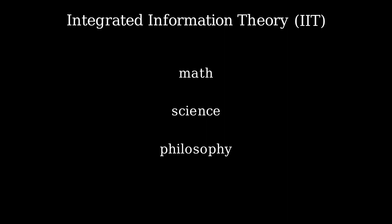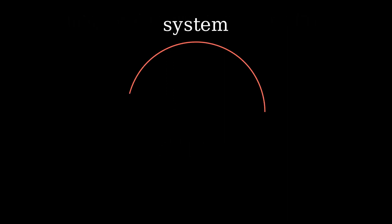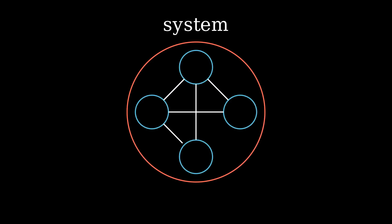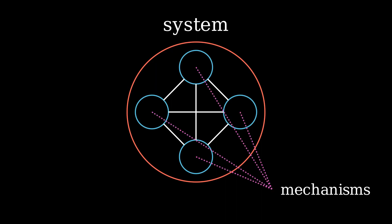To begin answering the question I posed earlier, we need to first notice that at a high level, we can think of virtually anything as being a system. A system is just a set of things that work together. For example, we can understand the brain as a system made of neurons. In IIT, the parts of a system — that is, the subsystems — are called mechanisms.